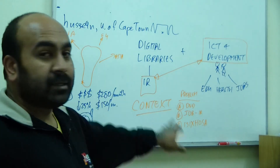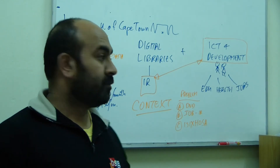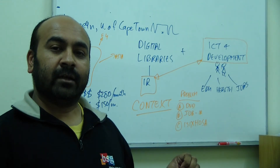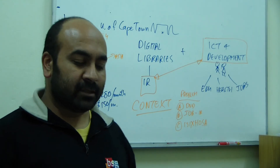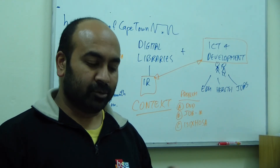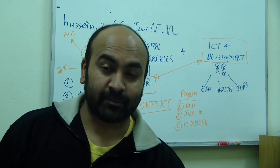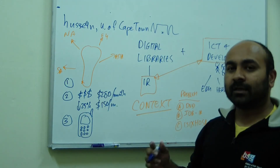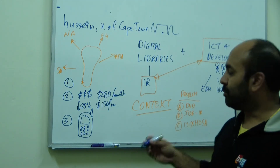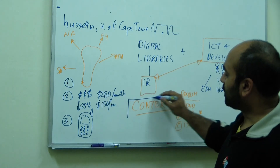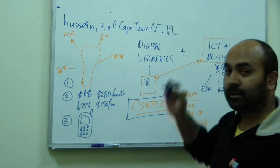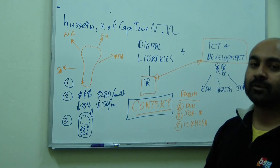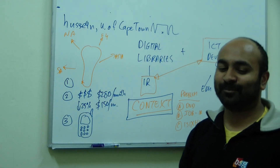These are three examples of problems at the intersection of information retrieval and ICT for Development. The takeaway message is that when thinking about this from a development perspective, context is the most important thing. As long as we think about context, we are able to apply information retrieval to all kinds of interesting problems. Thank you.